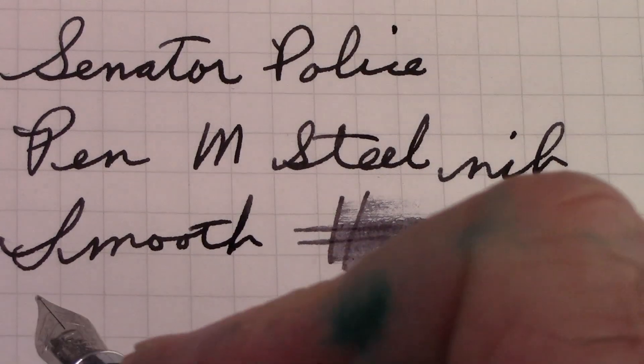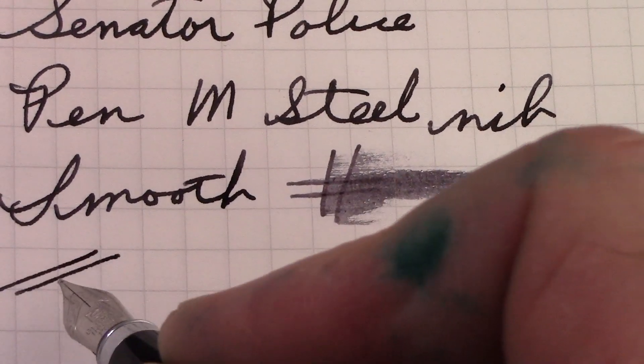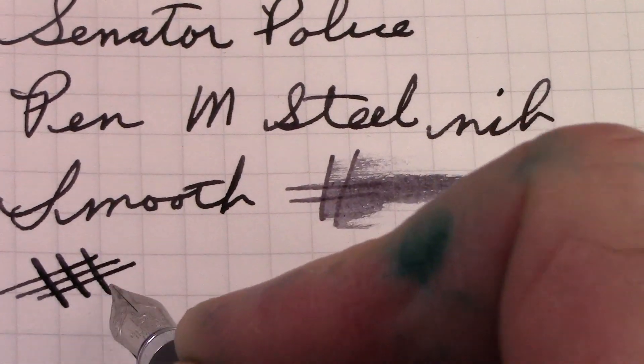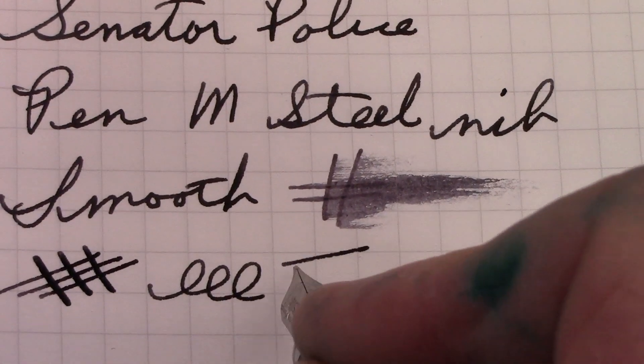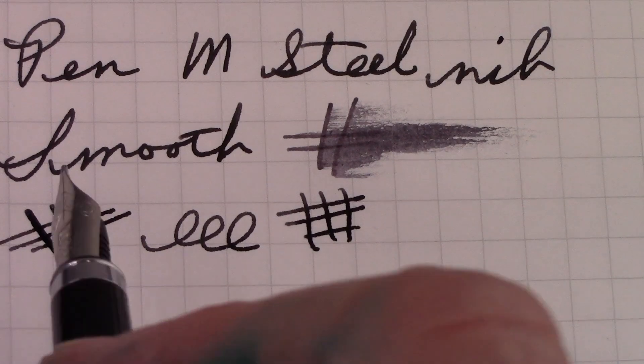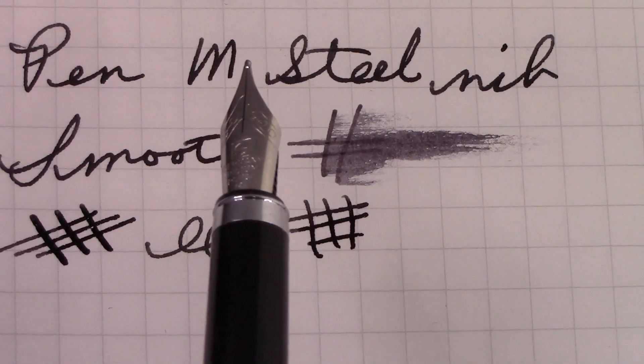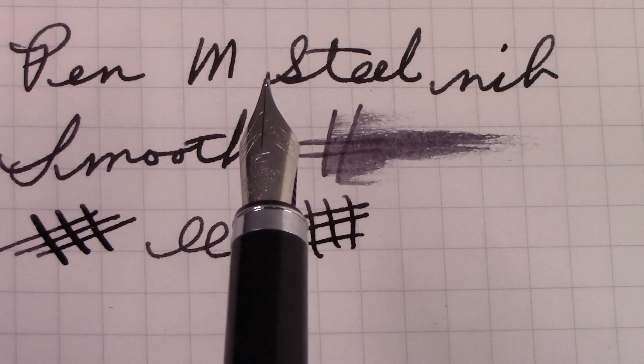So I'm impressed with this nib. It's a very nice steel nib, not sensitive to angle at all, has a little bit of give to it, just enough that it makes the writing experience quite pleasant. I have a generic cartridge in here. I tried to get a converter to work but nothing really fits securely that I had.